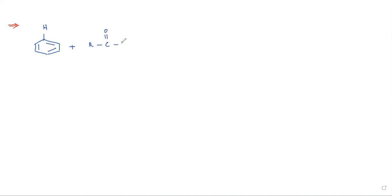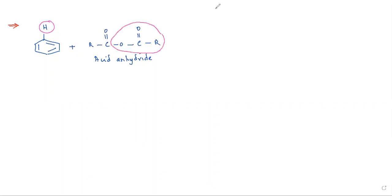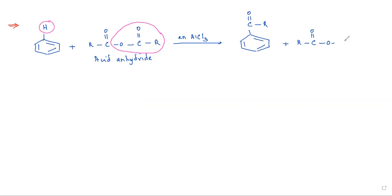Friedel-Crafts acylation can also be carried out using an acid anhydride. The anhydride reacts and we get acylbenzene as the product. The by-product is R-C(=O)-OH, a carboxylic acid.